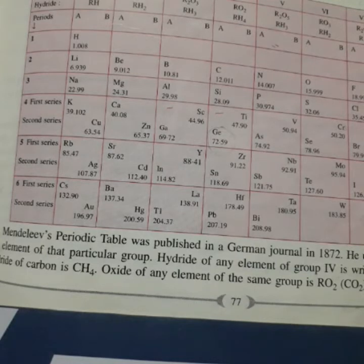This table explains how the properties of elements were repeated and how the elements were related to each other and how their chemical properties changed with increasing atomic mass. He arranged elements in order of increasing atomic mass.